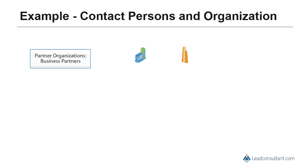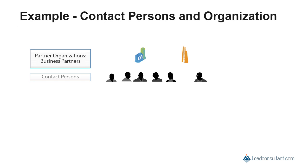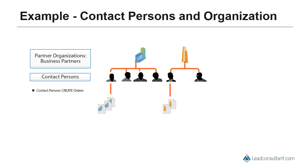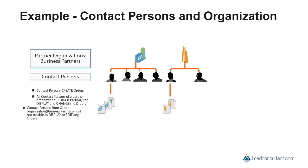In the next example, we have partner organizations or business partners, each with different contact persons associated with the organization. These contact persons create orders in the system. The requirement is that all contact persons within the same business partner can display and change orders regardless of which contact person created the order.